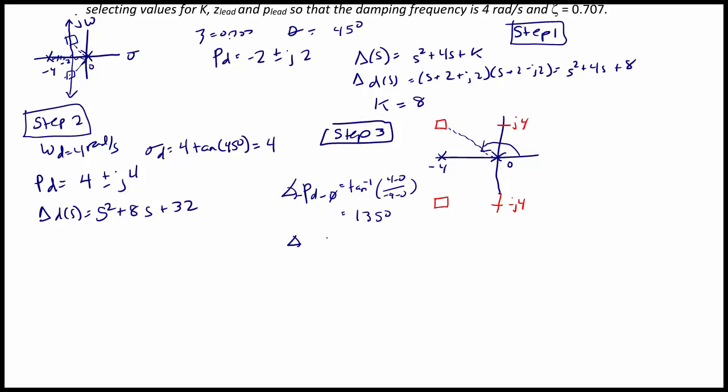And then the angle from the pole at negative 4 to the desired pole would simply be, since it's straight up, the arctangent of 4 minus 0 over negative 4 minus negative 4, which is 90 degrees.